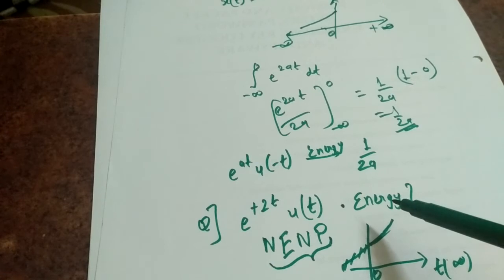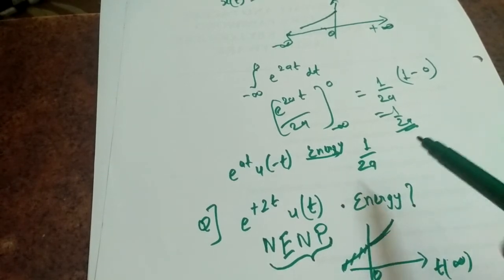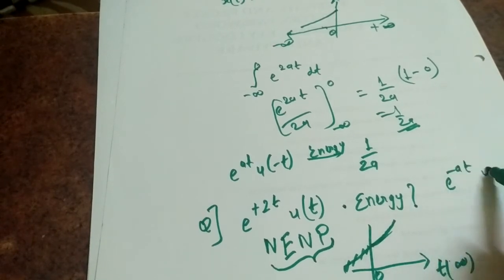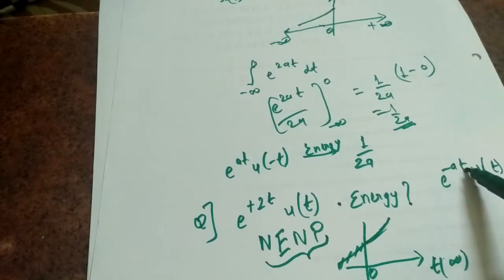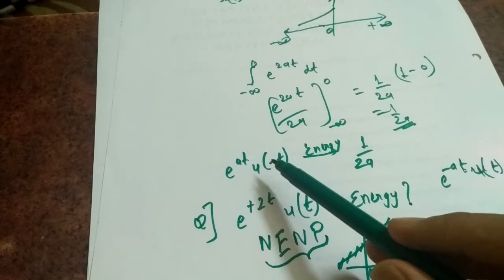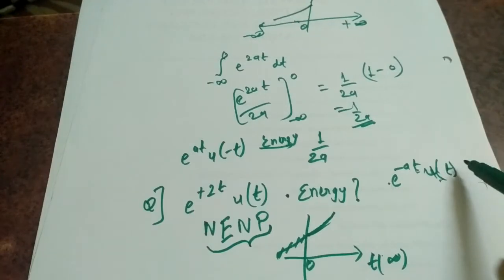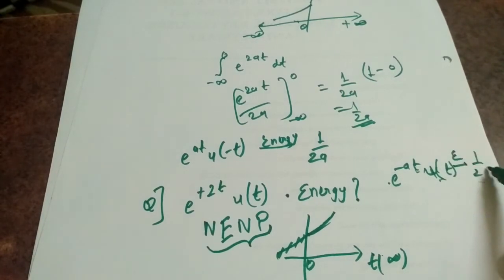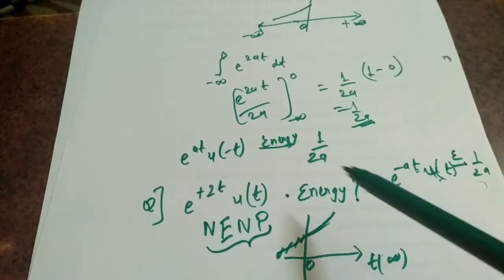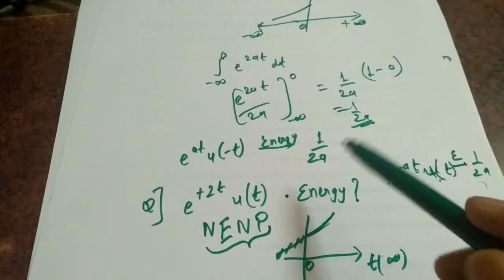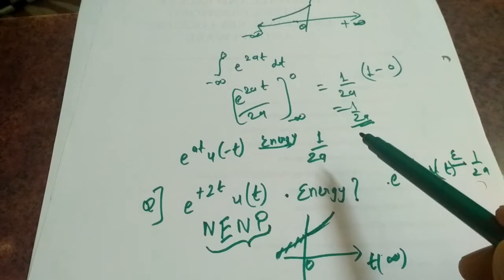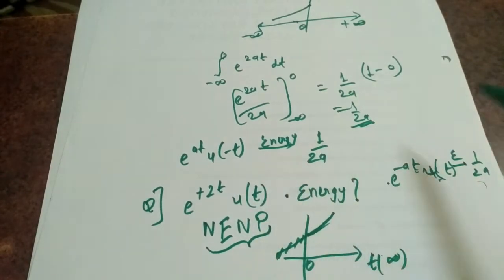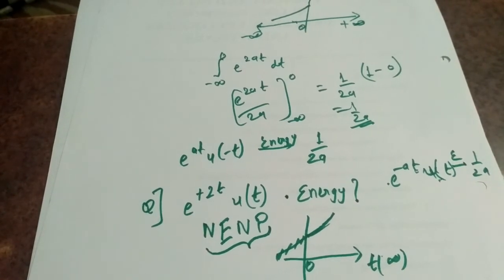One important conclusion: always check for boundedness before proceeding with energy or power calculations. Also, our first example was e^(-at)·u(t) and our second was e^(+at)·u(-t). Notice that substituting t by minus t in one gives the other, yet the energy remains the same — 1/(2a) in both cases. This means time reversal has no effect on the energy of a signal. So if x(t) has energy E joules, then x(-t) also has energy E joules.